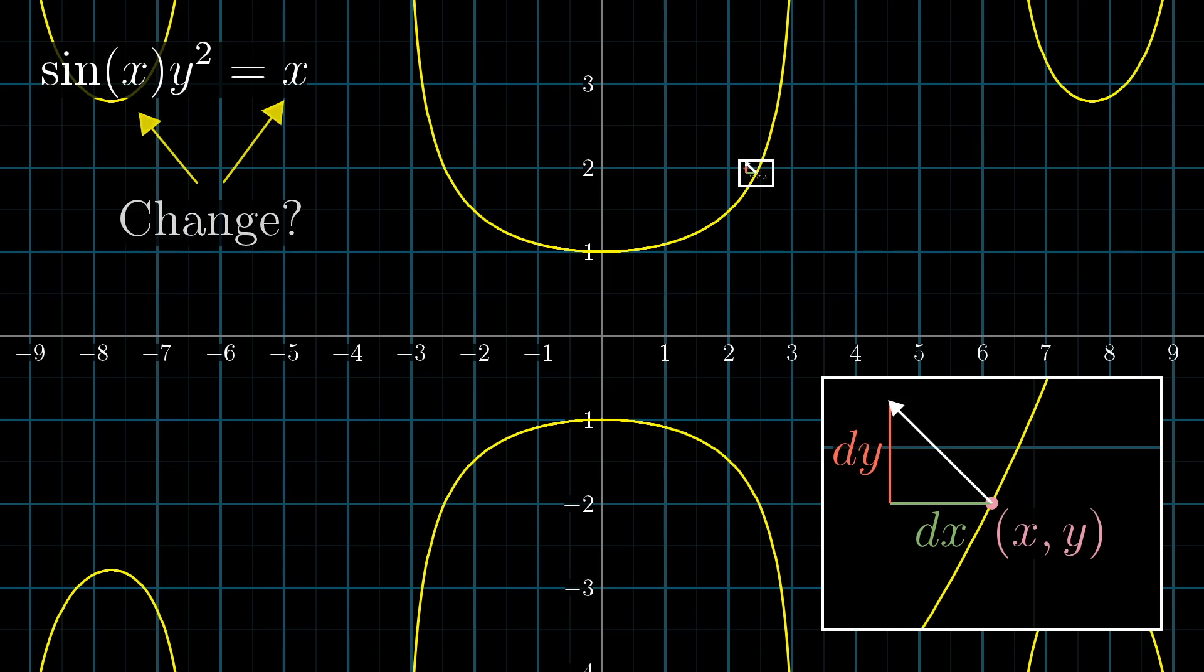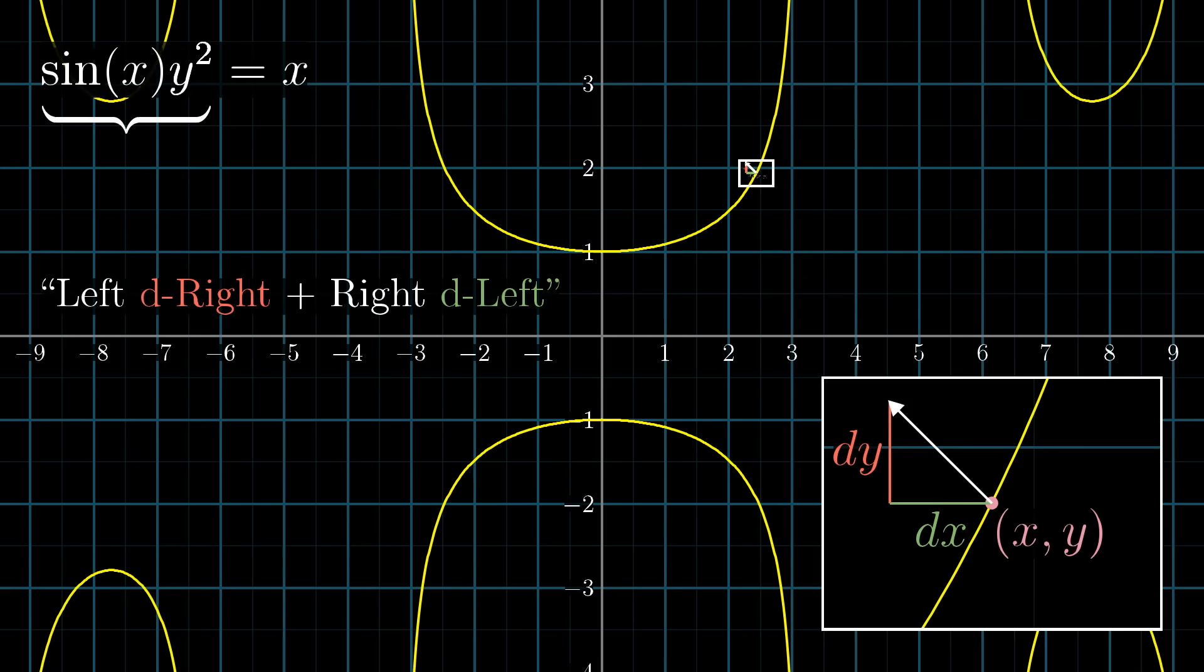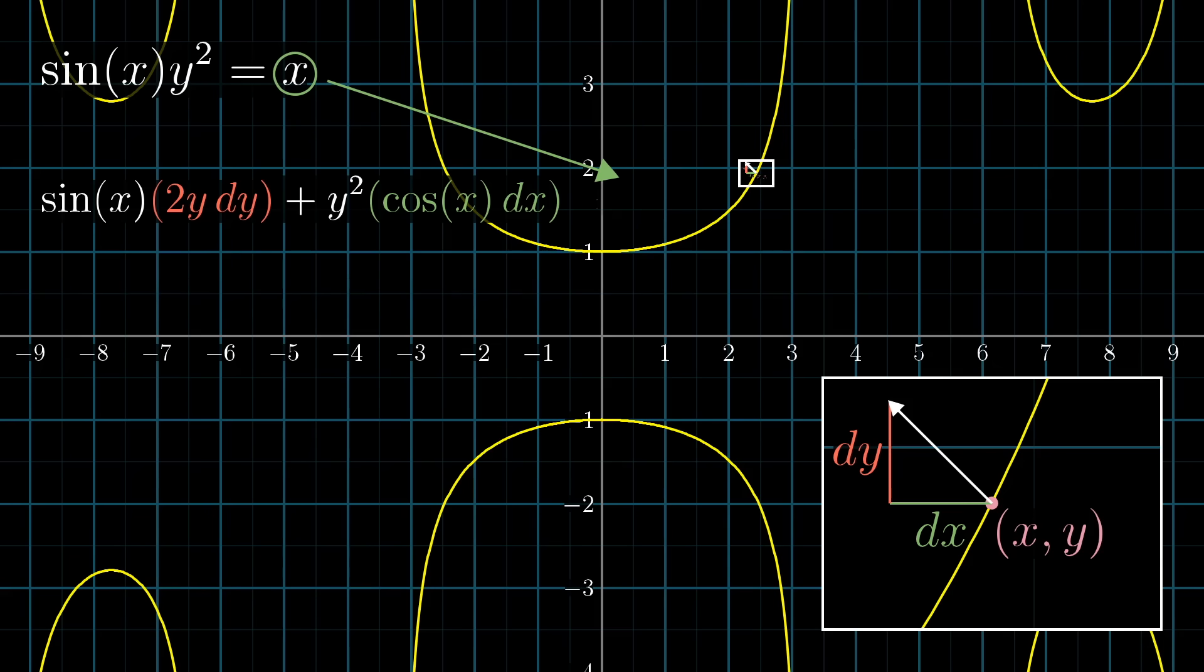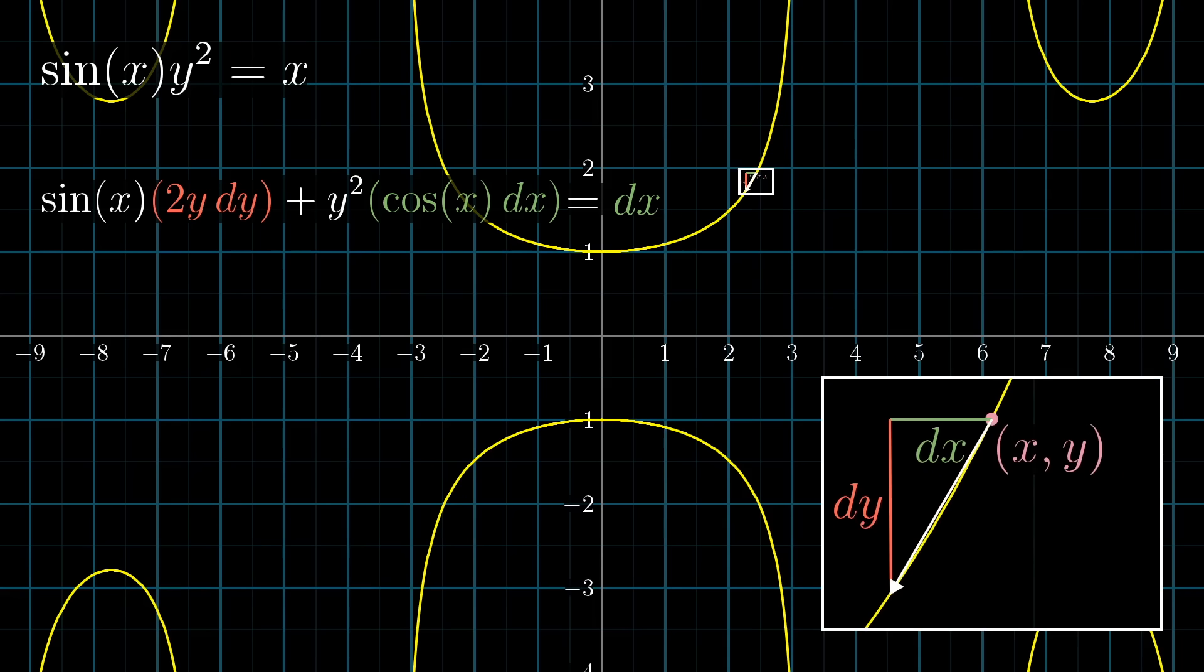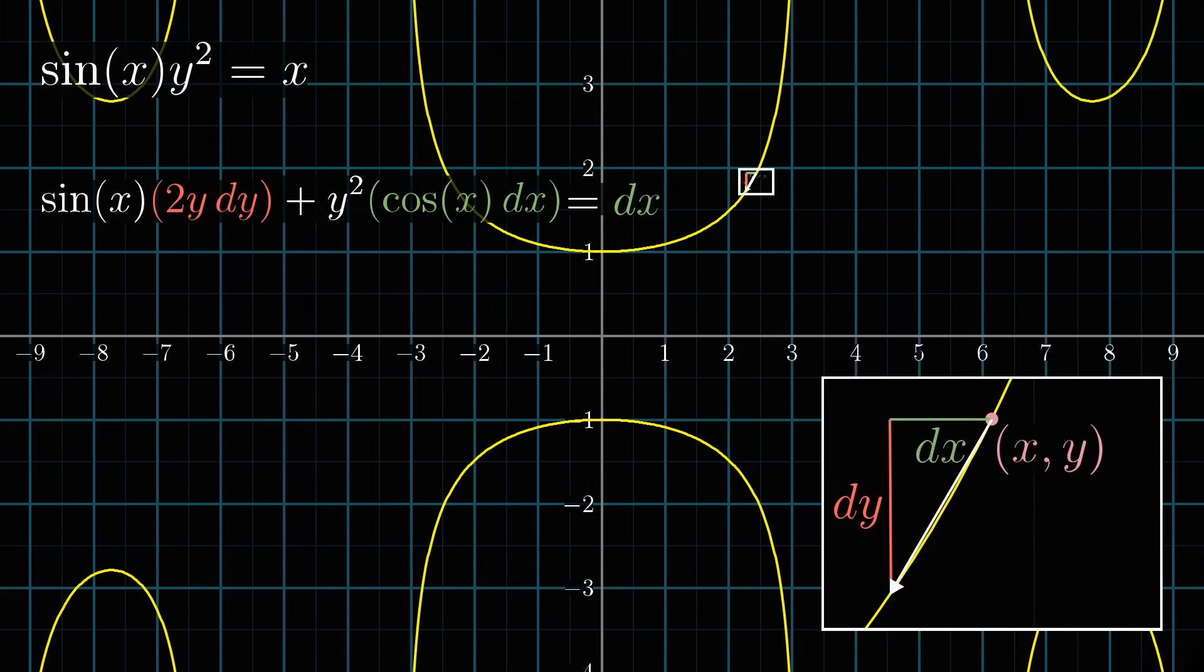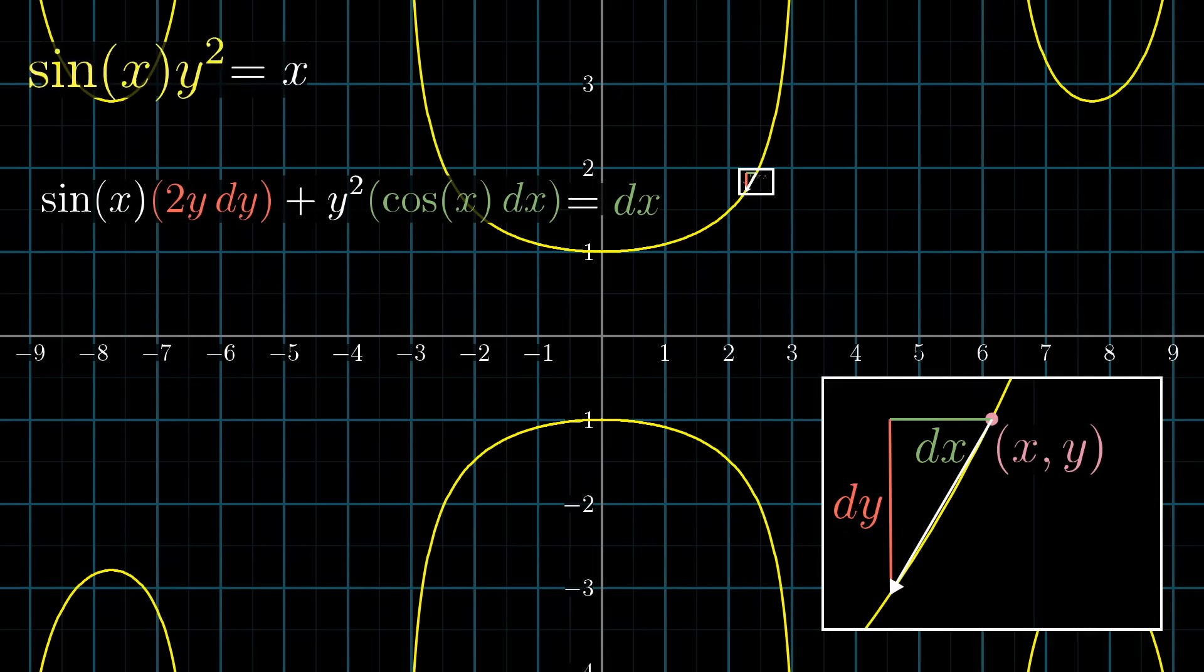Taking the derivative of each side of this equation is going to tell us how much the value of that side changes during this step. On the left side, the product rule tells us that this should be left d(right) plus right d(left). That is, sin(x) times the change to y², which is 2y times dy, plus y² times the change to sin(x), which is cos(x) times dx. The right side is simply x, so the size of a change to that value is exactly dx, right? Now setting these two sides equal to each other is a way of saying, whatever your tiny step with coordinates dx and dy is, if it's going to keep us on the curve, the values of both the left-hand side and the right-hand side must change by the same amount. That's the only way that this top equation can remain true.